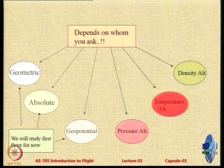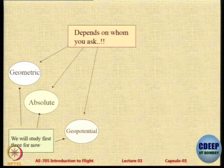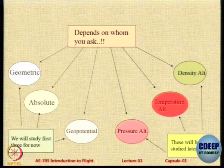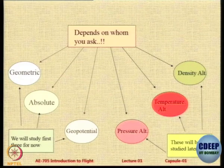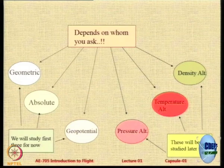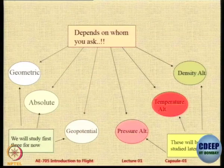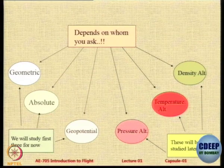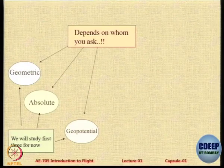Geometric, absolute, and geopotential altitudes — we will try to understand the difference. The other three — pressure altitude, temperature altitude, and density altitude — we will do later, because these come only from the operational point of view and not from the theoretical calculation point of view. They are relevant only when you do flight testing or operations. First let us do the simple theoretical part.